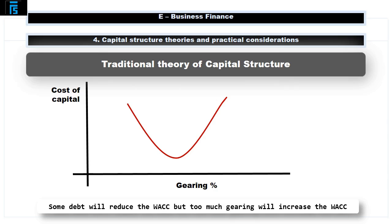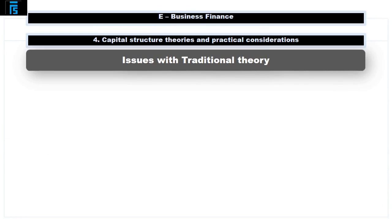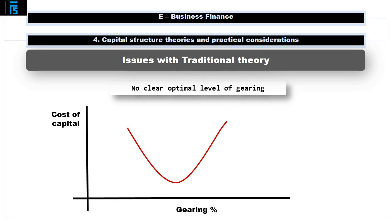The traditional view is realistic, but what is the problem with this theory? The main issue is that apart from trial and error, we don't know what level of gearing will reach the optimal level. We don't know how much gearing will affect the cost of equity and debt, and by how much — we can only try to get this balance right.